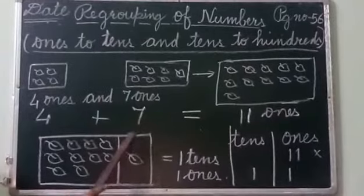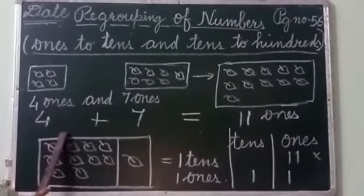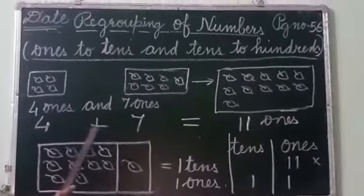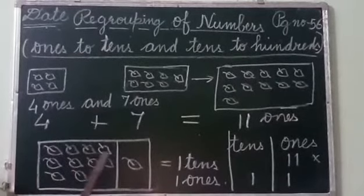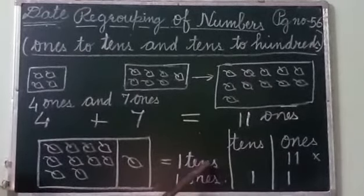Here you can see that these are 10 leaves in one group and this one is 1 in the ones space. So this is the ones space and this is the tens space. So you got 1 ten and 1 one.